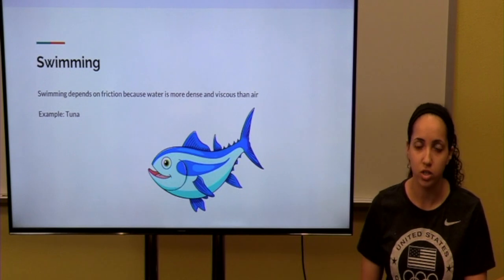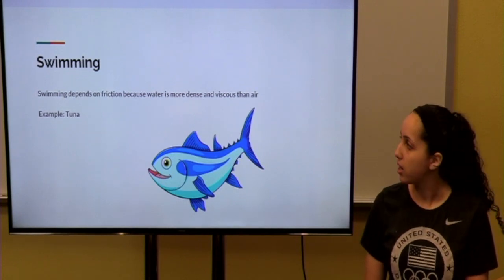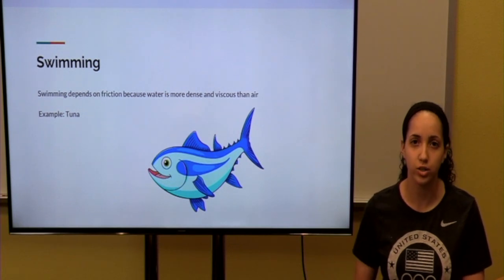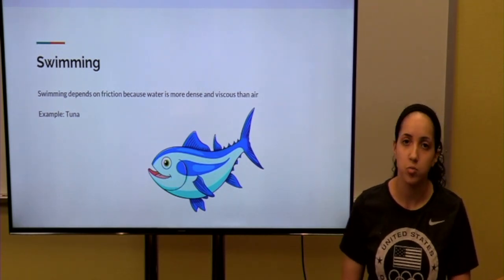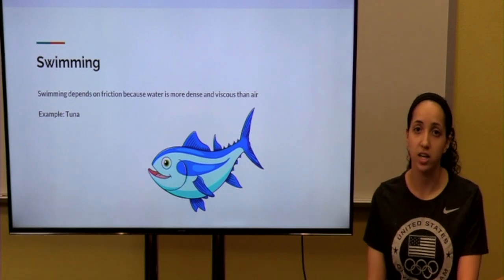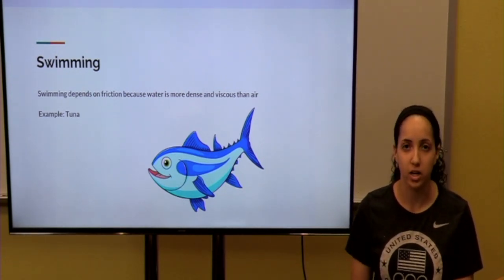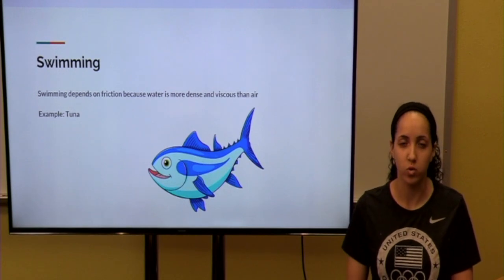Another type of locomotion is swimming. Swimming fights friction because water is more dense and viscous than air. An example of a fish that is fast is tuna. Tuna has a hydrodynamic body type that allows it to move through water more efficiently.